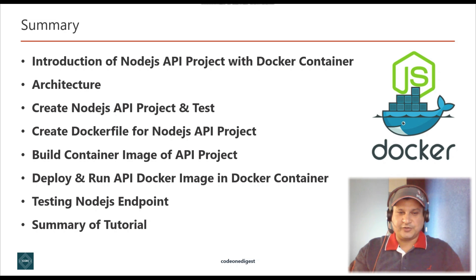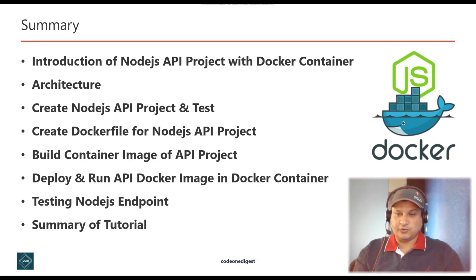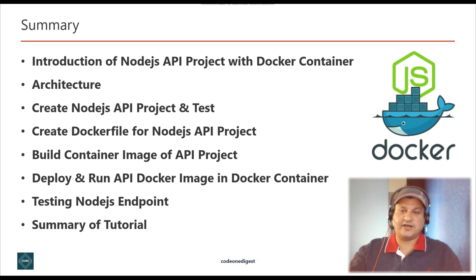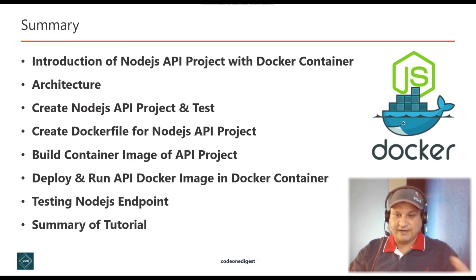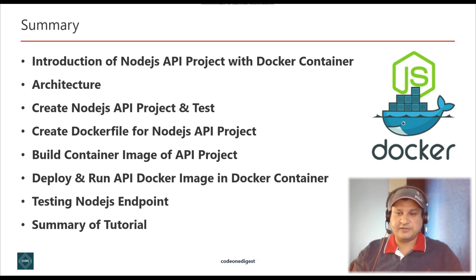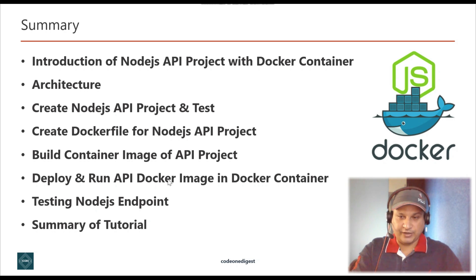Let me summarize what we learned today. I gave an introduction of the Node.js API project with Docker containers and explained the architecture diagram — how to create the project, how to create the Docker image, how to send the image into a Docker container, what port mapping is and why we map container port to localhost port. Then I walked through the Node.js API project, created a Dockerfile, built a Docker image, deployed it into a Docker container, and successfully tested the Node.js endpoints.